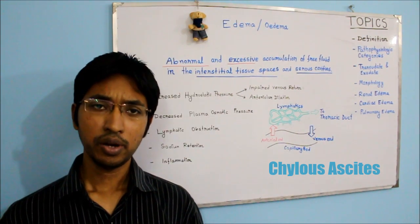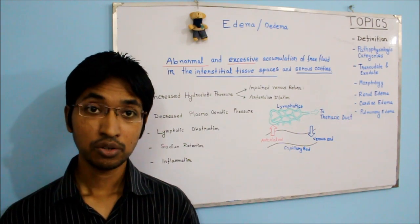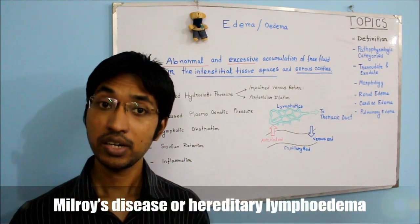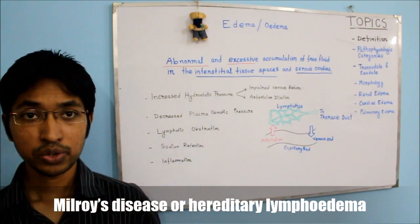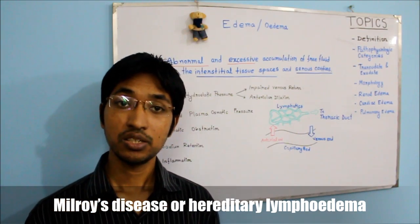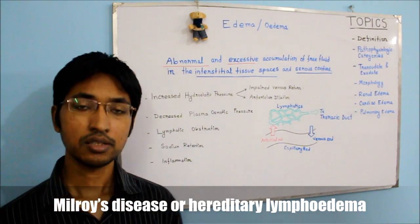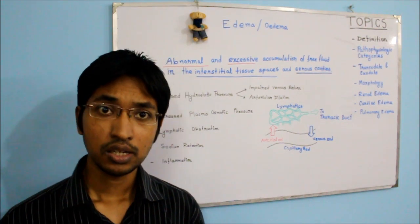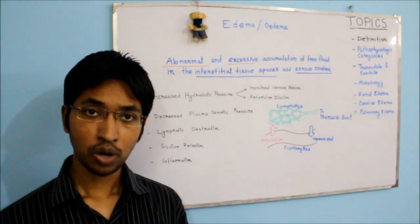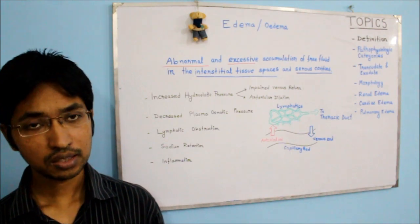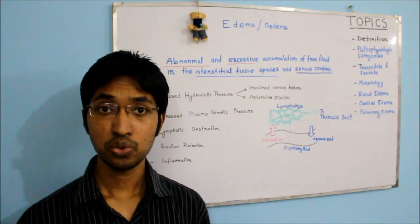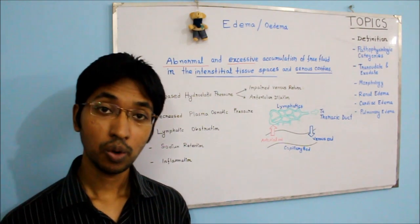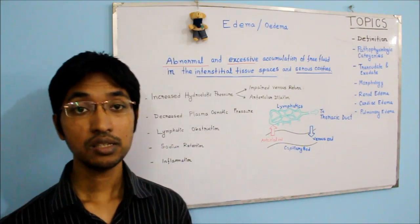Lymphedema can also happen due to hereditary causes. There is a disease called Milroy's disease, also known as hereditary lymphedema, in which there are developmental abnormalities of the lymphatic channels. This disease is familial in nature and usually causes lymphedema in one or both lower extremities.